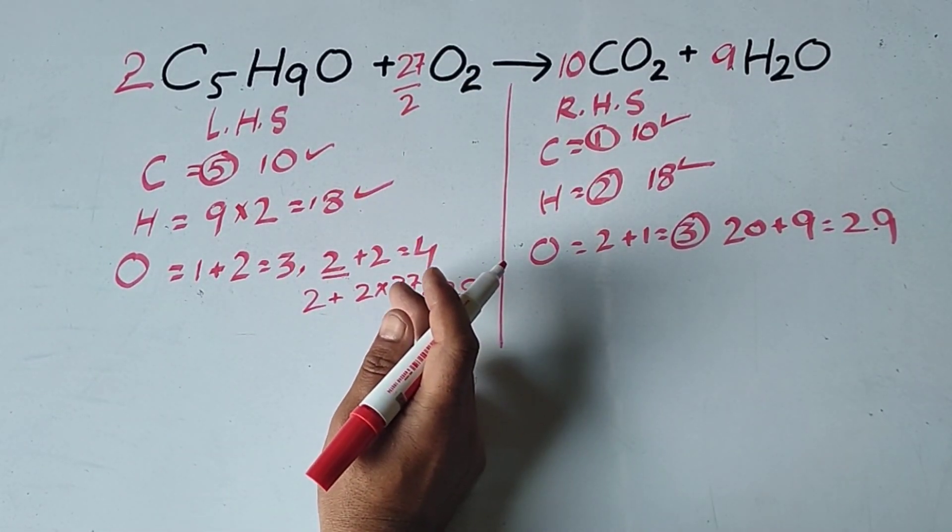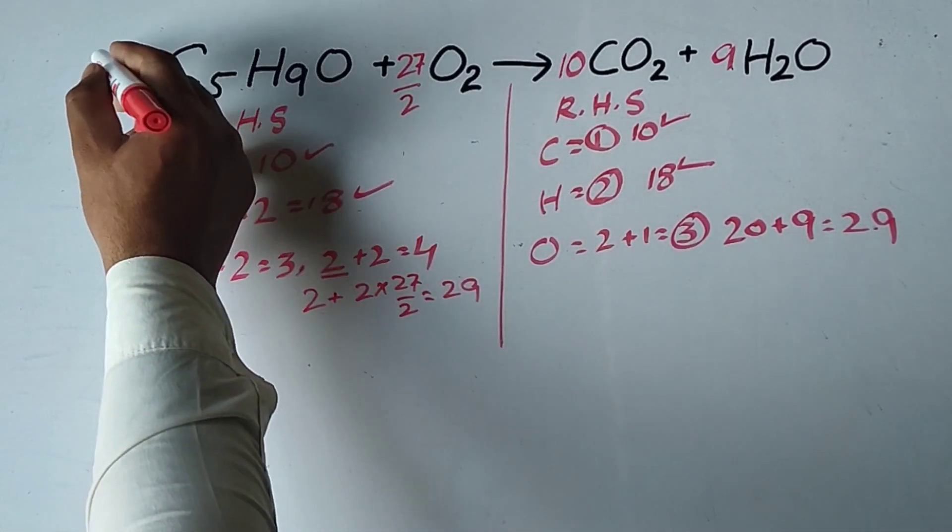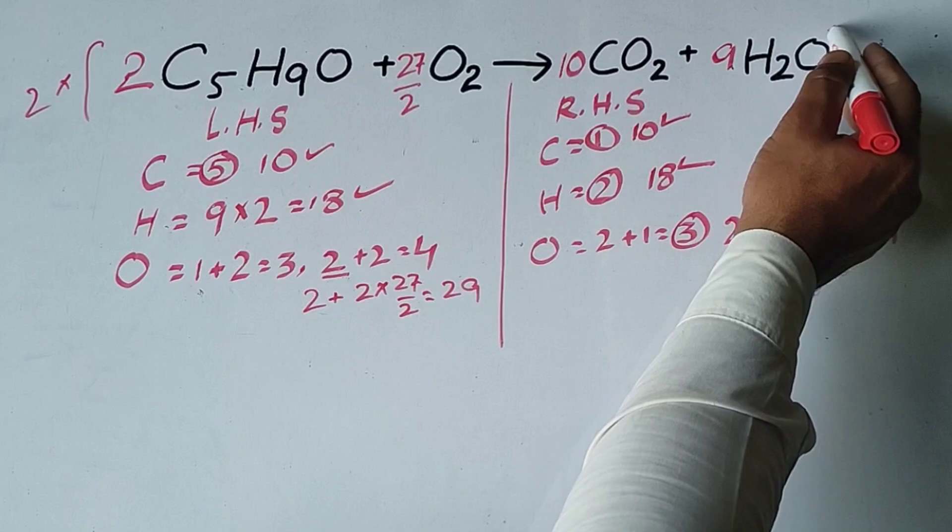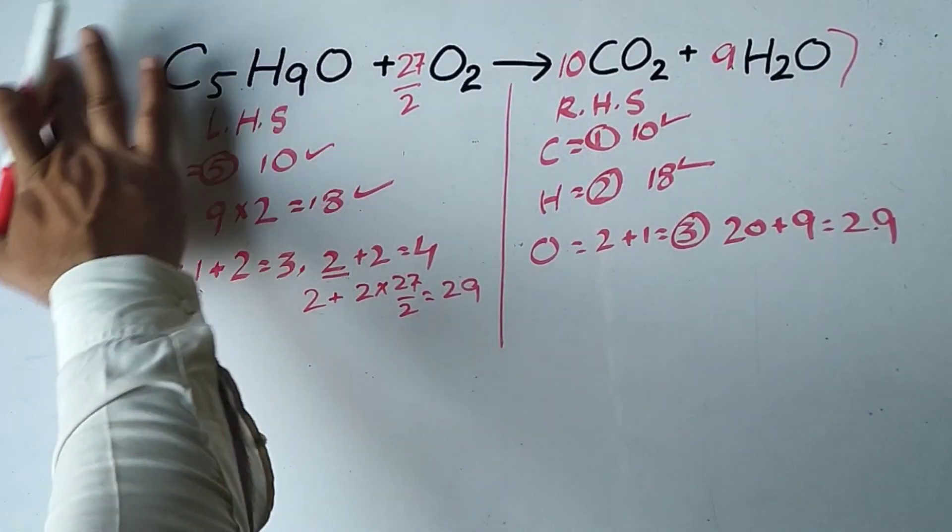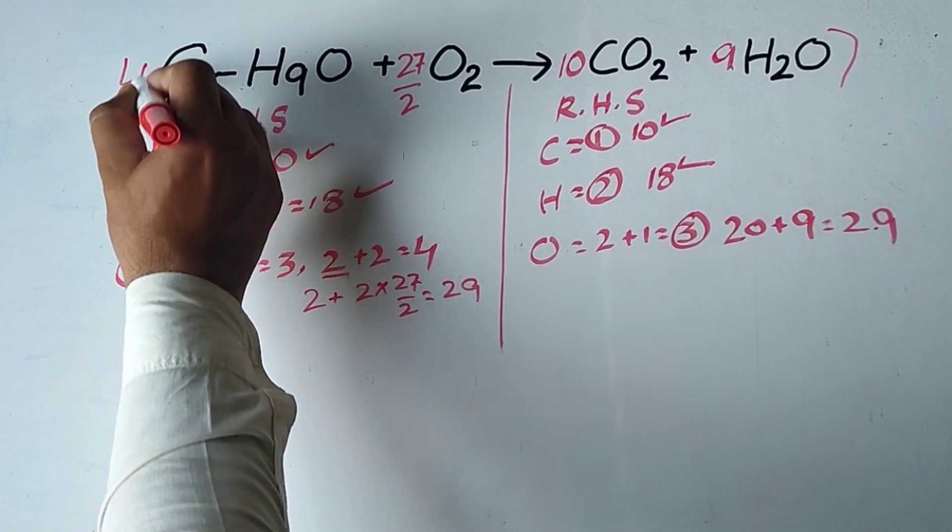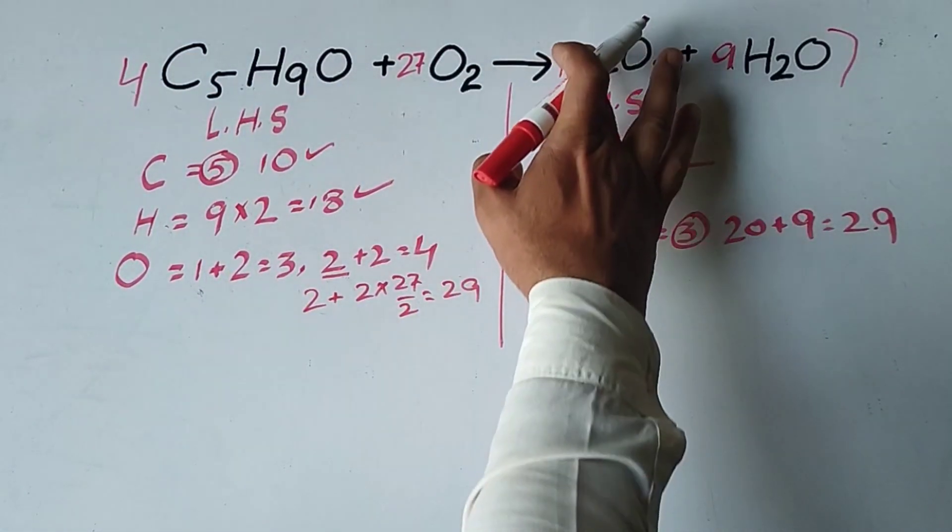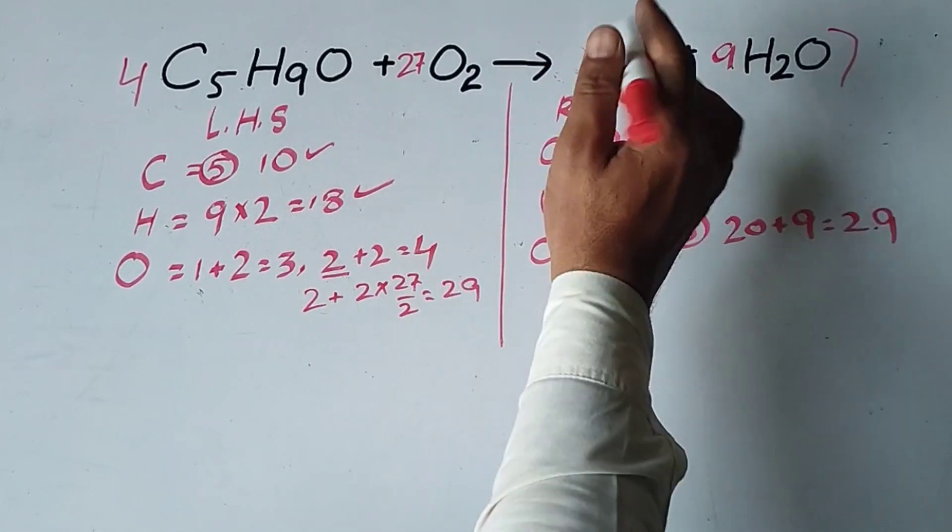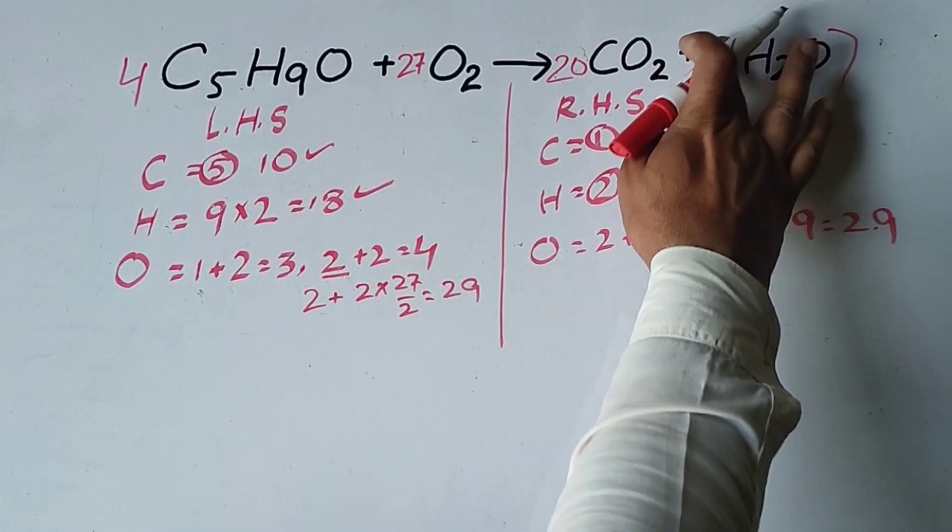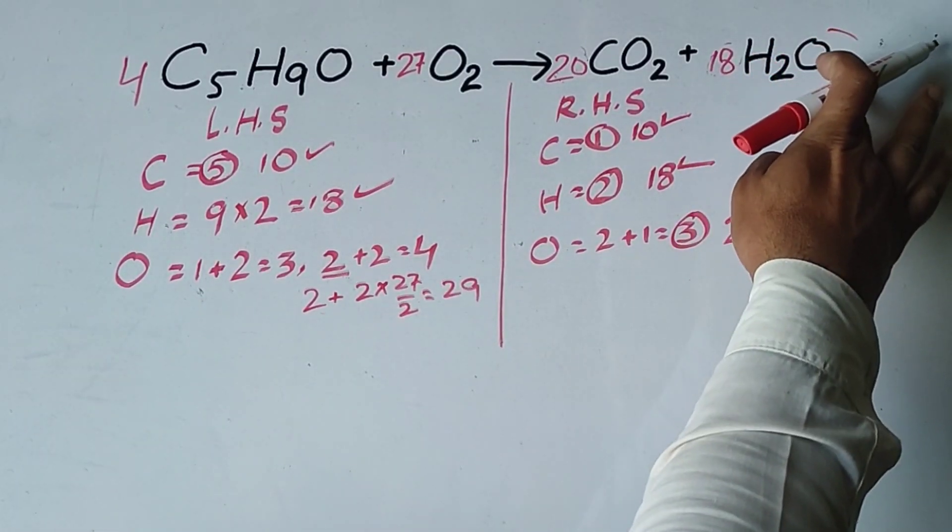We will convert this equation by multiplying the entire equation by 2. The fraction will be eliminated. Then 2 will convert into 4, 9 will convert into 18. This equation will be balanced.